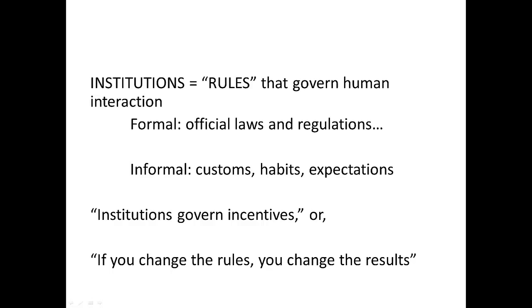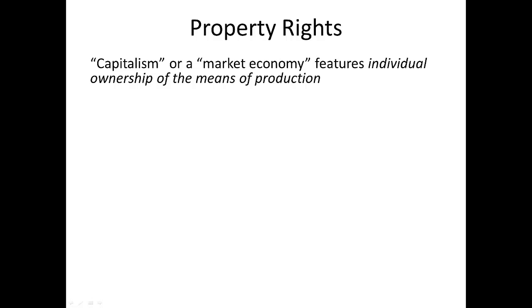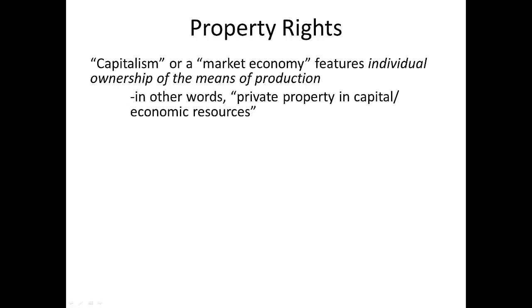Let's get right into the most important of all institutions, which is property rights. The market economy, sometimes referred to as capitalism — though I think market economy is a more apt term — is basically defined as an economy based on individual ownership of the means of production, otherwise known as private property. Resources include land, natural resources, and capital such as buildings, equipment, tools, vehicles, and factories.